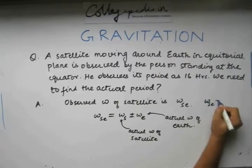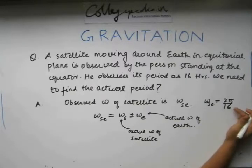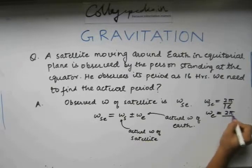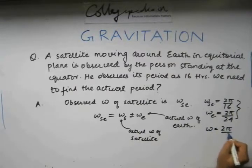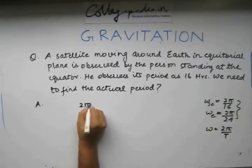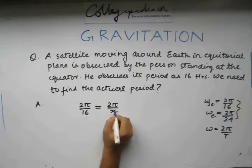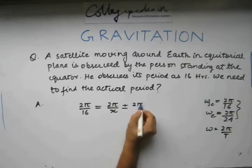Omega_se can be written as 2π/16 — ignoring the multiplier of seconds, this gives a result in per hour. Omega_Earth, as we know, is 2π/24, since its time period is 24 hours, coming from the fact that omega equals 2π/T. Putting this in our equation, we get 2π/16 equals 2π/x — where x is the actual time period of the satellite — plus or minus 2π/24.